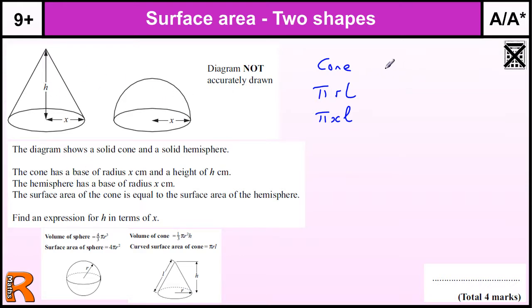So the cone surface area is going to equal the hemisphere. Okay, and the hemisphere we have, the surface area of the sphere is 4 pi R squared. So the hemisphere is going to be half of that, well the curved surface area is going to be half of that. So that's going to be 2 pi R squared, where R is X. So that's 2 pi X squared.